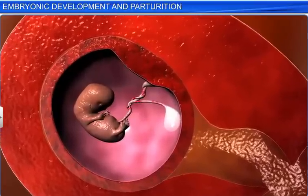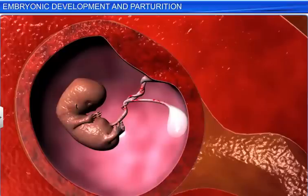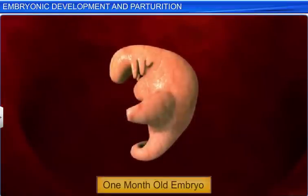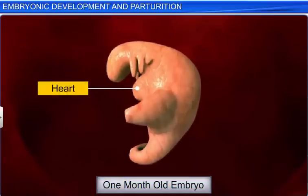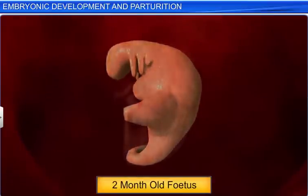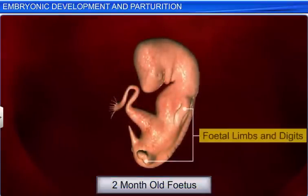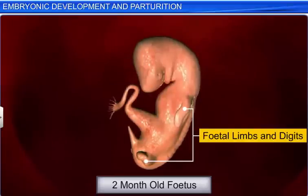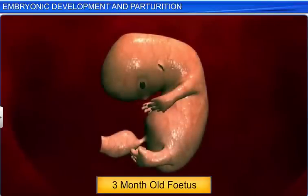The embryo stays inside the uterus for nine months, which is called the gestation period. During this period, the embryo undergoes several developments. By the end of the first month, the embryo develops a heart, while the end of the second month marks the transition of an embryo to a fetus with developing fetal limbs and digits. By the end of the third month, most of the organs are already formed.